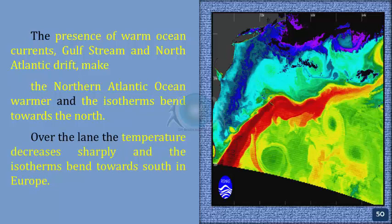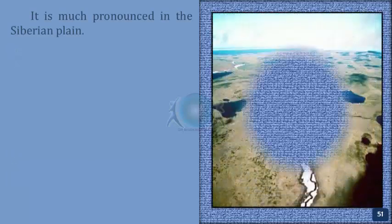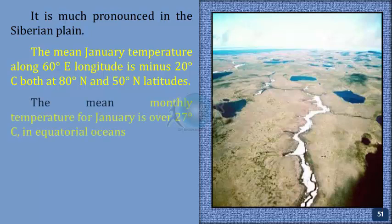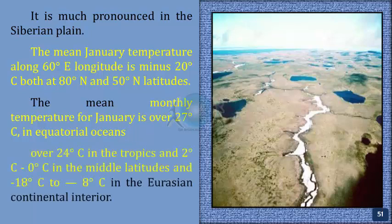Over the land, temperature decreases sharply and the isotherms bend towards the south in Europe — most pronounced in the Siberian plain. The mean January temperature along 60 degrees east longitude is minus 20 degrees centigrade both at 80 degrees north and 50 degrees north latitudes. The mean monthly temperature for January is over 27 degrees centigrade in equatorial oceans, over 24 degrees centigrade in the tropics, 2 to 0 degrees centigrade in the middle latitudes, and minus 18 to minus 8 degrees centigrade in the Eurasian continental interior.